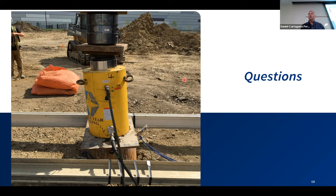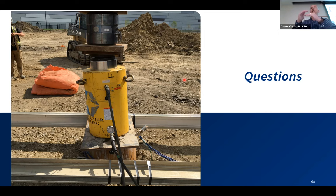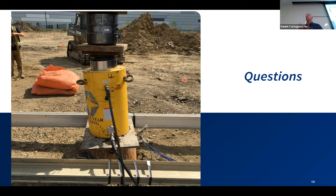Final question clarification: shaft friction information doesn't come from the O-cell itself — it comes from the strain gauges. The O-cell is essentially a jack expanding and pushing the pile up and down, generating resistance below the lower plate and above the upper plate. As the pile moves, shaft resistance develops along the shaft, and the strain gauges capture that information and give us the shaft resistance values.